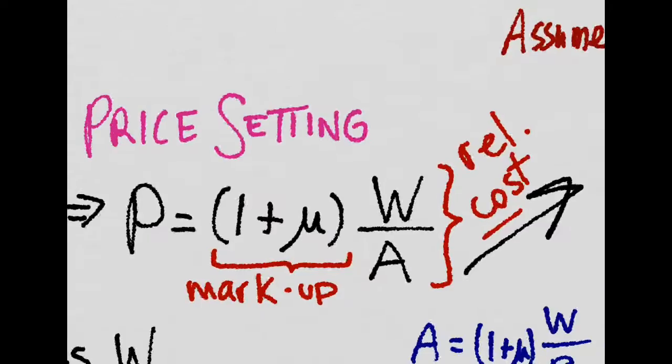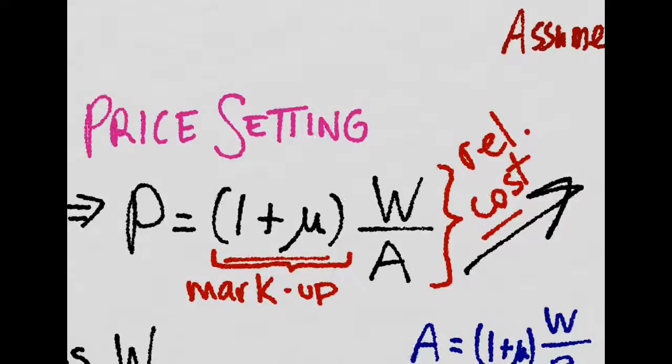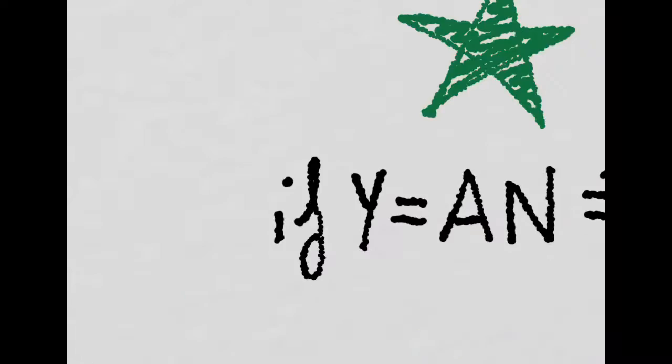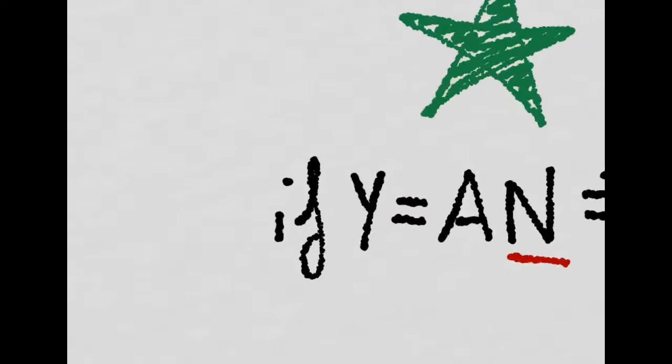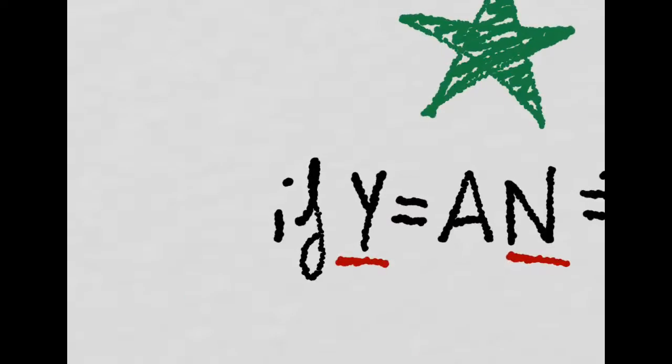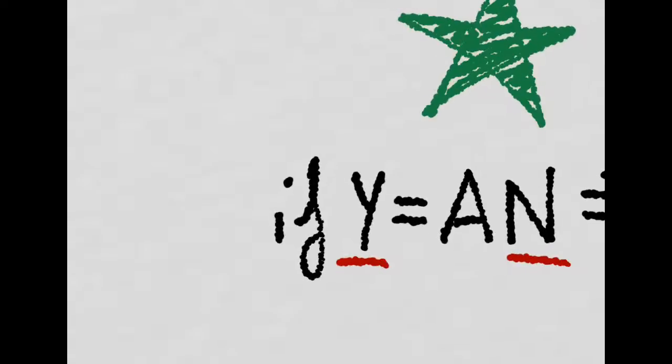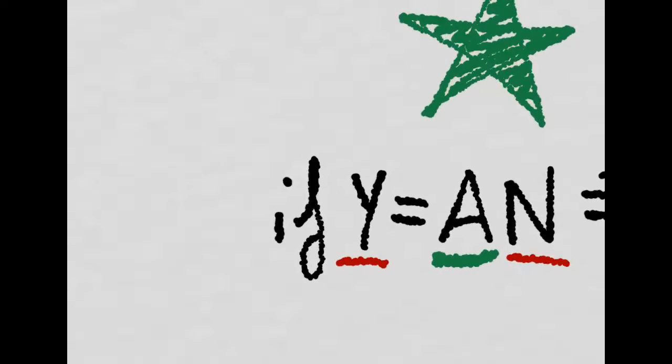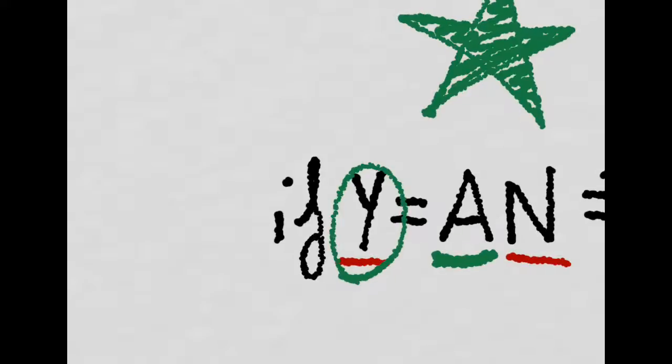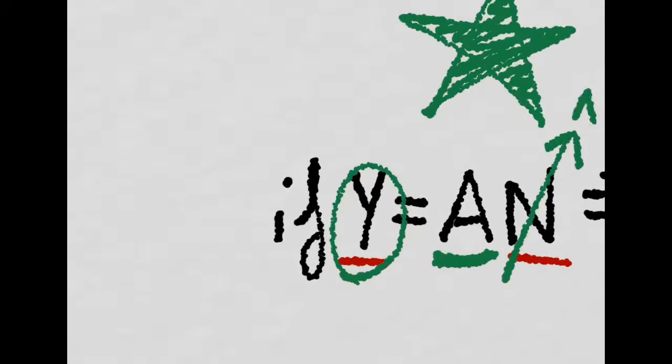We have the markup, and then we have something we're going to call relative costs. Imagine that firms only use labor to produce output. This will be the production function, and this A represents technology, the productivity, meaning the amount of output that will be produced by one worker.